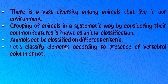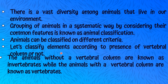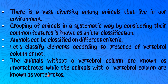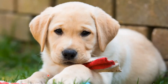Let's classify animals according to presence of a vertebral column or not. Vertebral column means skeletal bone. The animals without a vertebral column or skeletal bone are known as Invertebrates, and the animals with a vertebral column, or with a bone, are known as Vertebrates. Simply, the vertebral column can be named as Backbone.